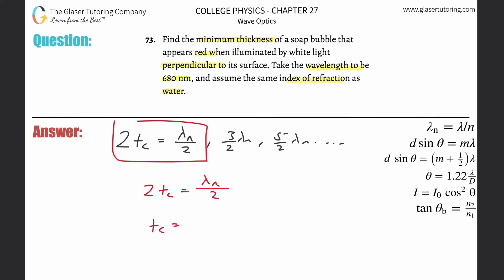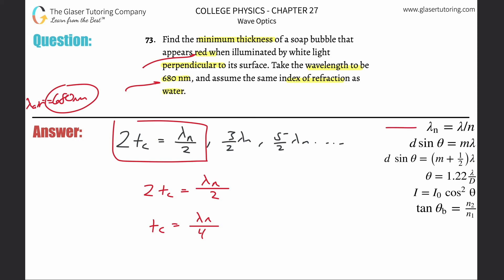Algebraically, the minimum thickness equals the wavelength in the film divided by 4. But what is the wavelength in the film? If you're seeing red light, the 680 nanometers is the wavelength in air — that's where your eyes are. So I need the wavelength in the soap, not in air.